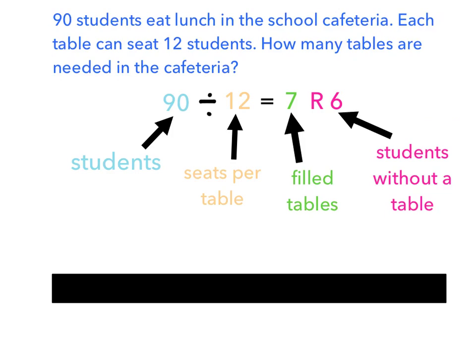So again, we're working with the same equation, 90 divided by 12 equals 7, remainder 6. In this case, the 90 represents the number of students who eat lunch in the school cafeteria. The 12 represents the number of seats that are available at each of the tables in the cafeteria. The 7 represents the number of filled tables, meaning there are 7 tables in the cafeteria that have 12 students sitting at them.